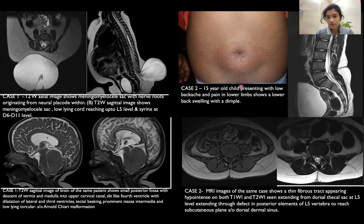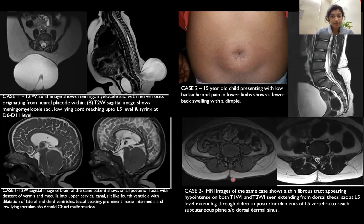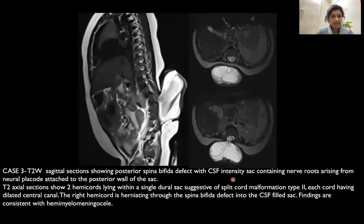The second case is of a 15-year-old child presenting with low backache and a midline skin dimple. T2 sagittal, T1, and T2 axial images show a T1/T2 hypointense fibrous septum extending from the dorsal thecal sac at L5 level through a defect in the posterior spinal elements to the subcutaneous plane, suggestive of a dorsal dermal sinus.